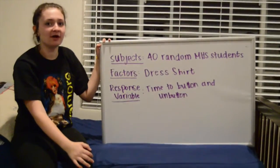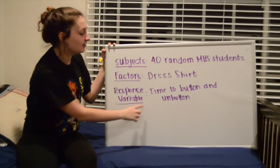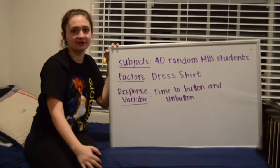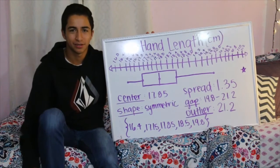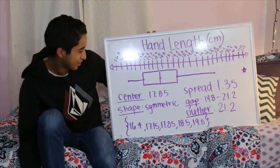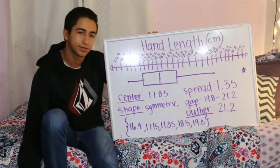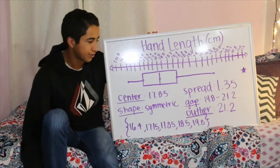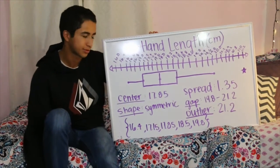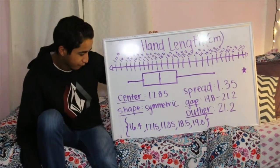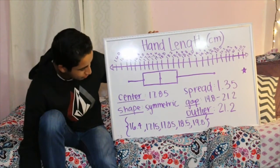The subjects of our observational study were 40 random MHS students. The factor was the dress shirt, and the response variable is the time to button and unbutton the shirt. This is our box plot for hand length in centimeters. It has a center median of 17.85, its shape is roughly symmetric, a spread IQR of 1.35, and a gap from 19.8 to 21.2 with an outlier at 21.2. Our five-number summary is 16.4, 17.15, 17.85, 18.5, and 19.8.